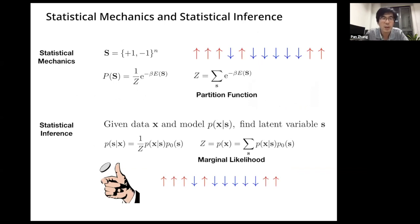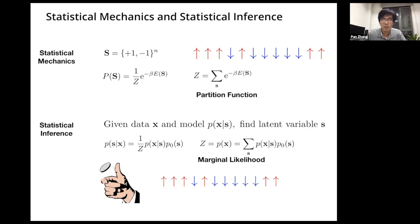In statistical mechanics, we have a configuration and Boltzmann distribution, and we need to estimate the partition function. In statistical inference, we have some data x and a model which gives us a likelihood p(x|s). The task is to estimate latent variables or parameters of the model using Bayesian inference. Bayesian inference says that if we want the posterior distribution p(s|x), it is proportional to the product of the likelihood times the prior. We are often interested in the normalization factor Z, also known as the marginal likelihood, which is the sum over all possible configurations of the latent variable s. So Z, or log Z — the marginal log likelihood — usually tells us how good the model is in describing the data.